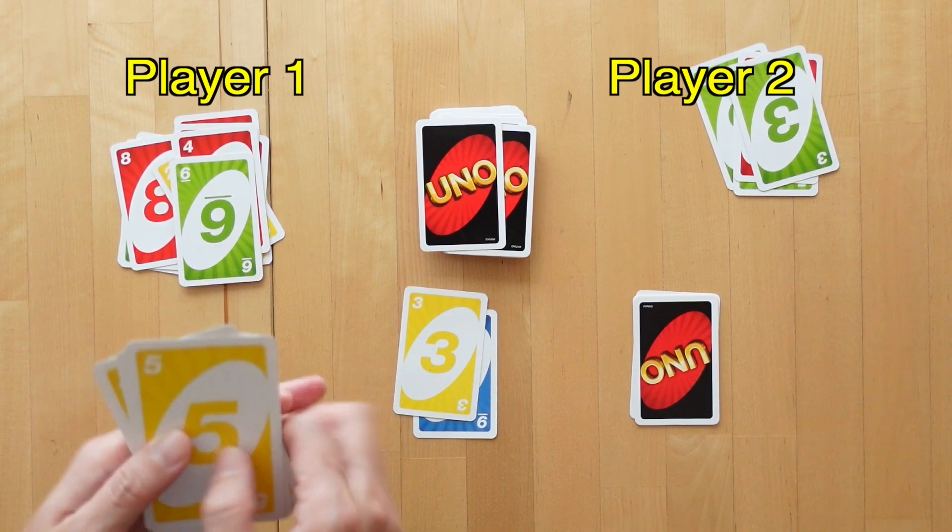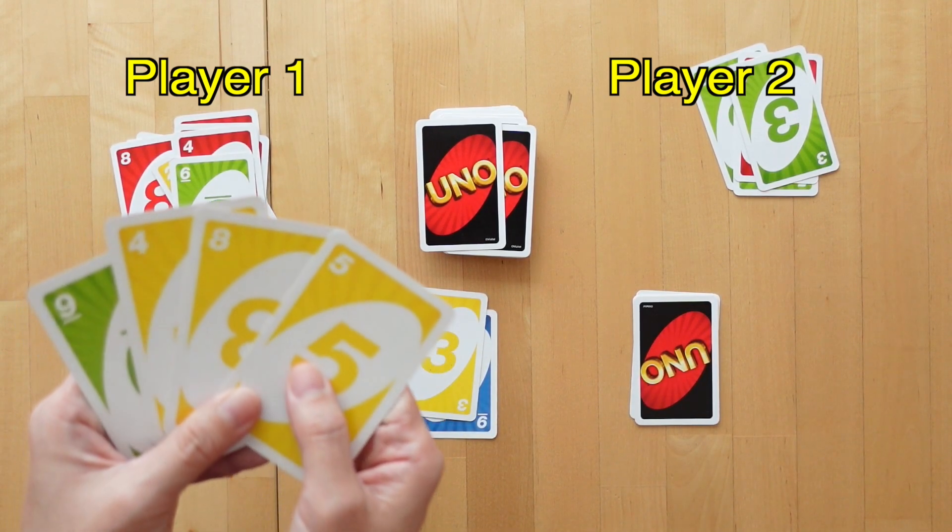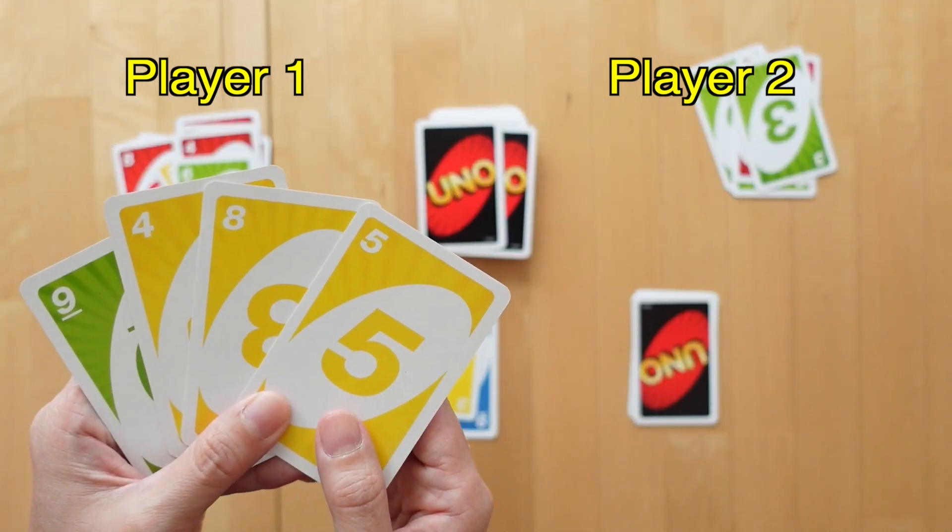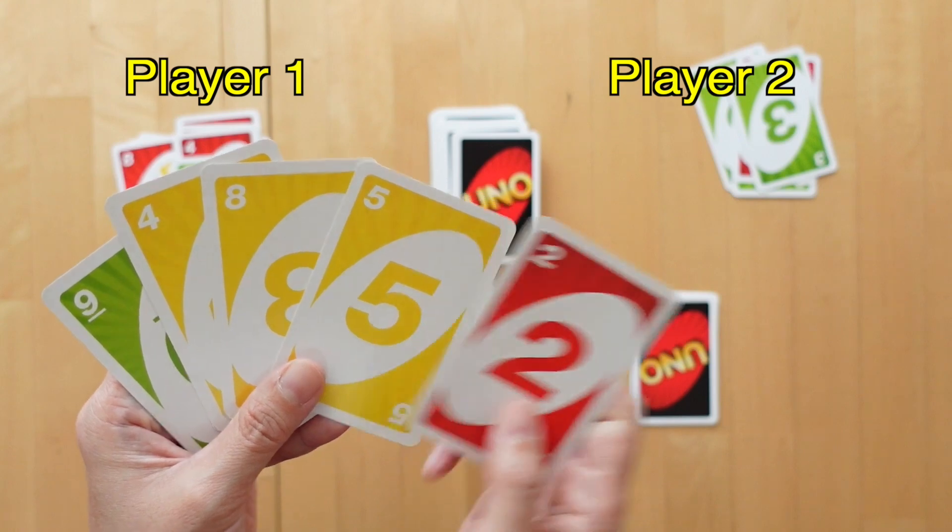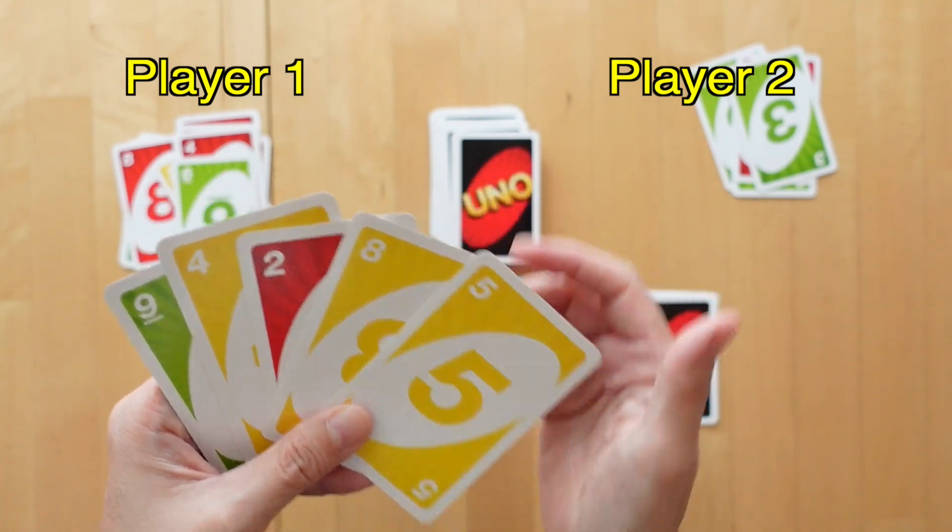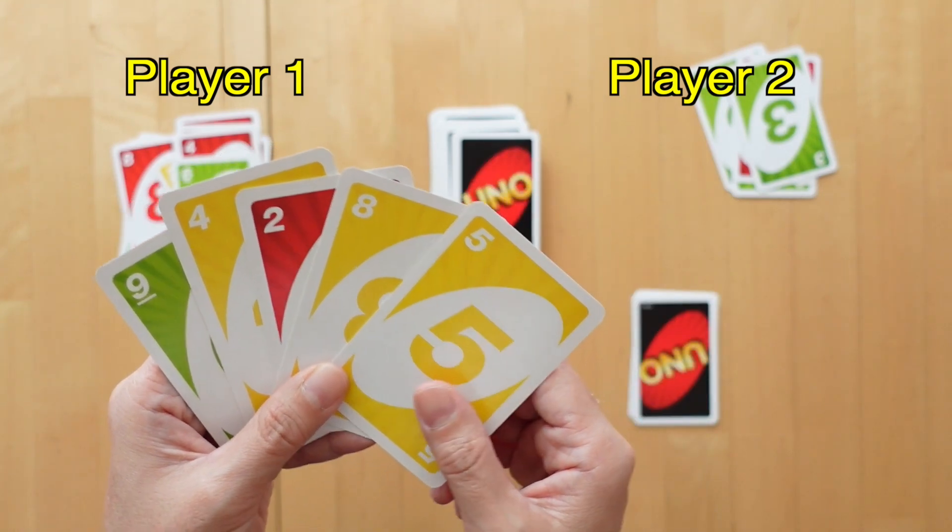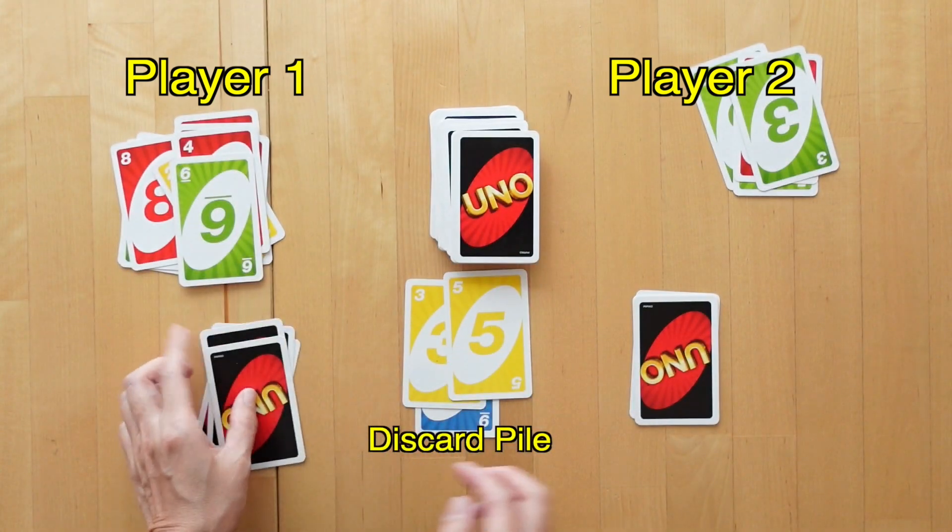On player 1's turn again. This looks like I will not be able to make a 20 just yet, but I will draw 1 card. Good. 2 and 8 can make a 10 for later. I will discard 5.